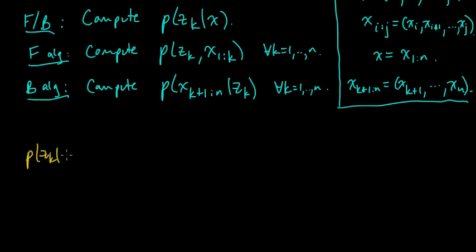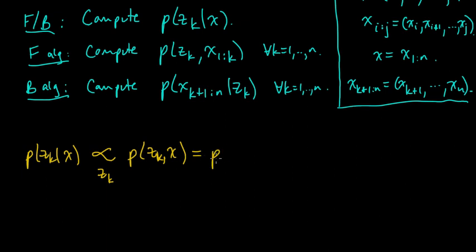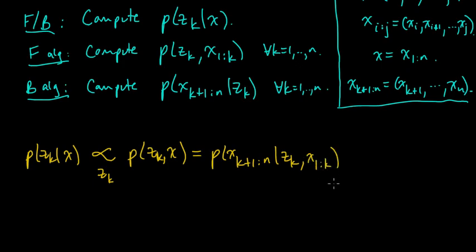Well, the probability of ZK given all the X's is proportional, as a function of ZK, to the joint distribution on ZK and X. We can break up X — which is X1 through XN — by conditioning on ZK: we get P(XK+1:N | ZK, X1:K) times P(ZK, X1:K). We can always do this factorization.